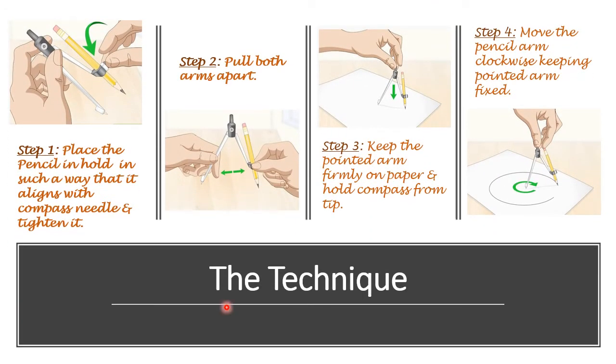Now let's learn the technique to use compass. Step 1: Place the pencil hold in such a way that it aligns with compass needle and tighten it. Step 2: Pull both arms apart. Step 3: Keep the pointed arm firmly on paper and hold compass from tip. Step 4: Move the pencil arm clockwise keeping pointed arm fixed at a point.